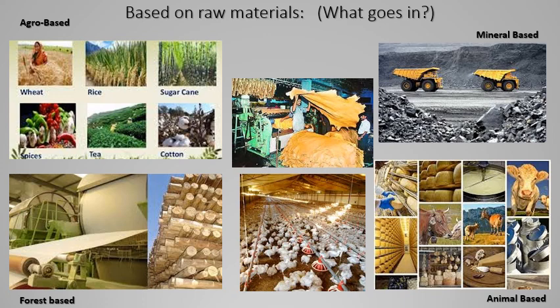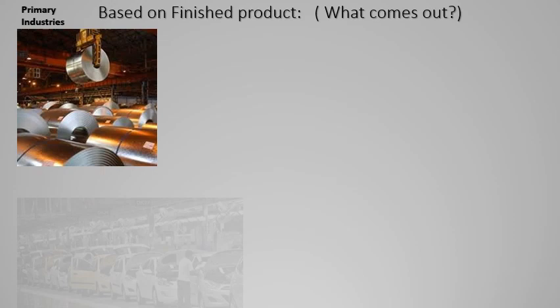Mineral-based industries include extraction of metals, precious elements, coal, and petrol — these play a huge role in improving the economy. Forest-based industries are mainly used for furniture, paper, energy as firewood, and other related products. So these are industries classified based on what goes in as raw material.